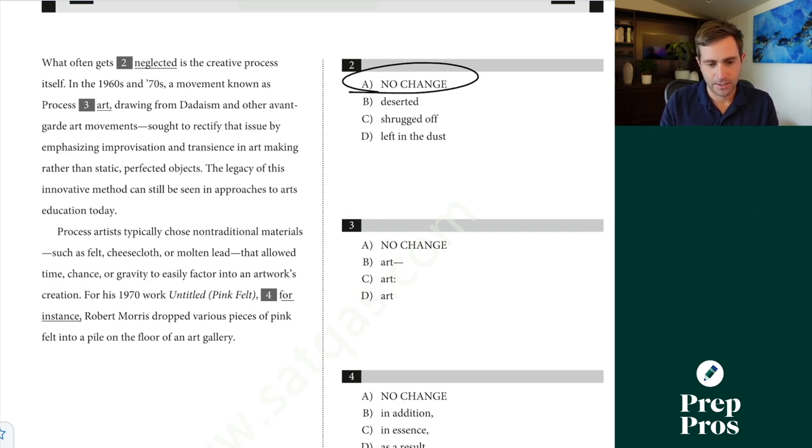In the 1960s and 70s, a movement known as process art, drawing from dadaism and other avant-garde art movements. This is something I'm always watching out for. I see a dash here, I see a dash here. You want to be careful you're reading the full sentence because it's really common to see this extra information. But here, when we put the dash here and we have the second dash, we can take all of this out. In the 1960s and 70s, a movement known as process art sought to rectify that issue by emphasizing improvisation and transience in art. This makes perfect sense, so we need the two dashes.